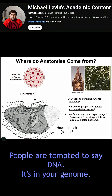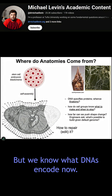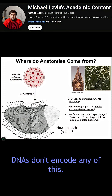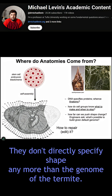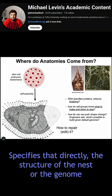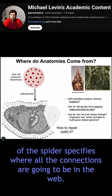People are tempted to say DNA — it's in your genome. But we know what DNA encodes now. DNA doesn't encode any of this. It encodes the tiny molecular-level hardware that every cell gets to have. DNA doesn't directly specify shape any more than the genome of the termite directly specifies the structure of the nest, or the genome of the spider specifies where all the connections are going to be in the web.